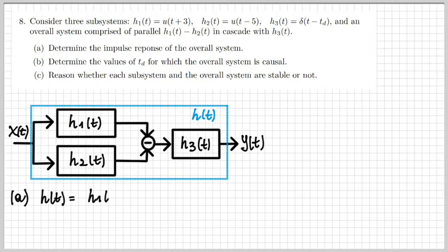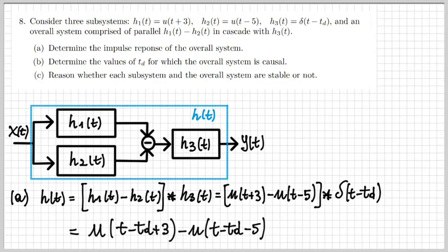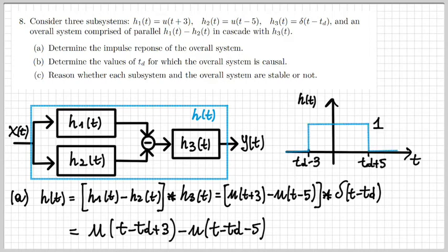To determine the impulse response of the overall system, it will be given by the parallel of h1 and h2 — which is the difference of their impulse responses — convolved with h3(t), which is in cascade with the parallel. Substituting the expressions, we have a difference of two step functions u(t + 3) − u(t − 5) convolved with the delta function δ(t − td). Recalling the properties of the delta function, convolution with a delta simply shifts the signal in time by td, giving us u(t − td + 3) − u(t − td − 5). For td equal to zero, this is a rectangular function that is 1 within a certain interval and 0 elsewhere.